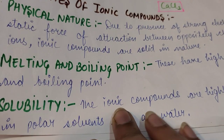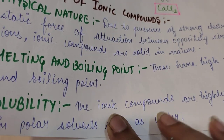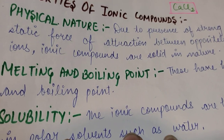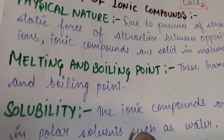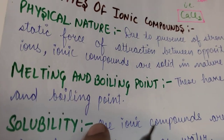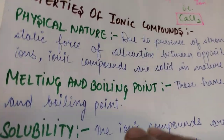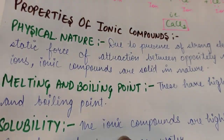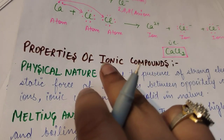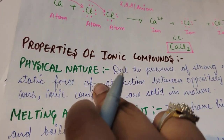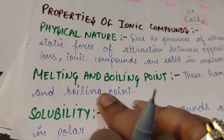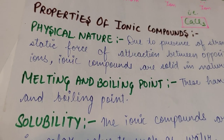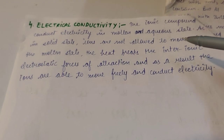Next, if we talk about solubility, ionic compounds are highly soluble in polar solvents. Polar solvents are those in which there is a positive-negative charge separation. So we have covered three properties: physical nature — they are solid; melting and boiling point — high; and solubility — they are soluble in polar solvents like water.